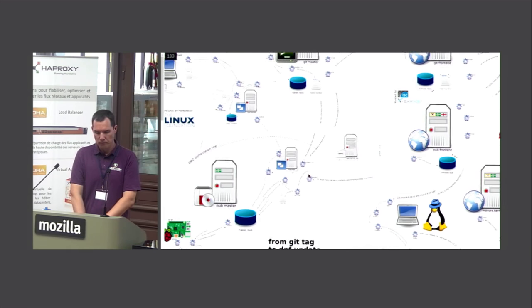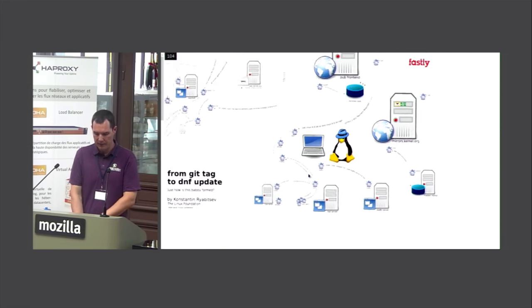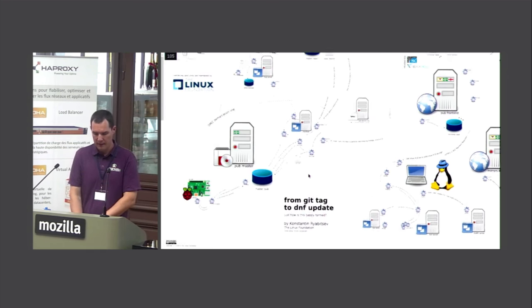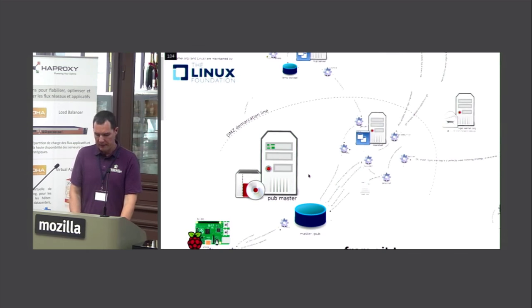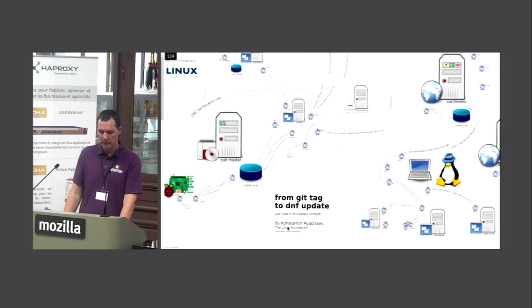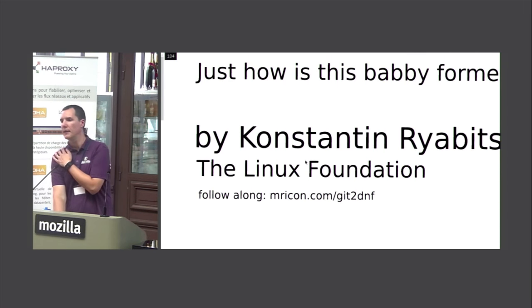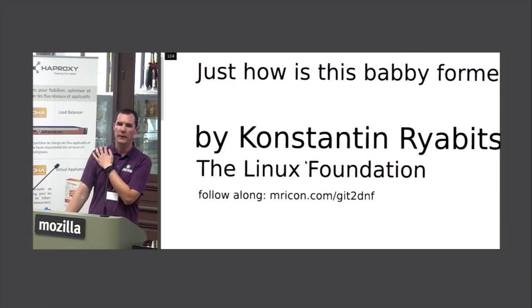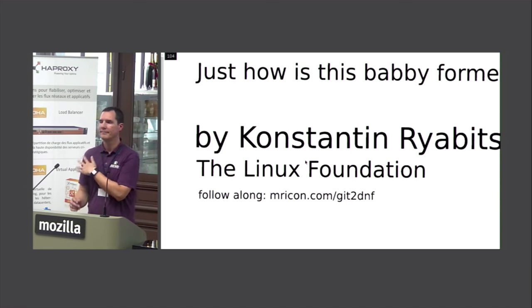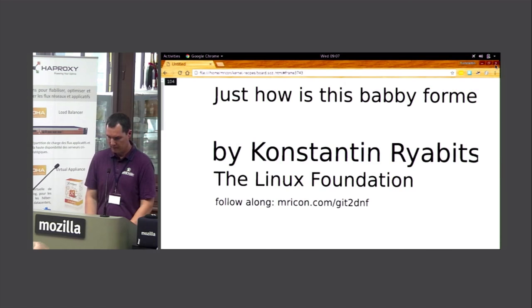Any questions about the overall process? There's still the DNF part, but that's for LinuxCon. If you want to zoom in and pan through the diagram on your own, the URL is mricon.com/git-to-dnf, and you can see and follow the entire process there. Thank you very much.